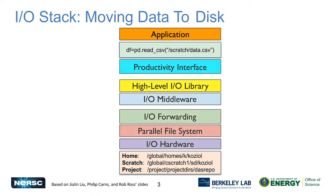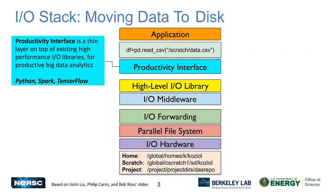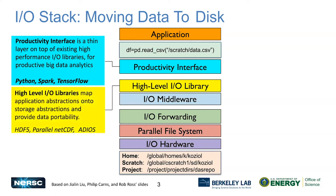In general, there are quite a few more layers between your app and the file system. There's a productivity interface layer, a couple of layers of IO middleware, and then it gets down into what we'd consider the storage system before it hits the hardware. The productivity interface is usually a thin layer focused on a language or specific model, maybe a science domain at the highest level. Below that are more general high-level IO libraries that provide object-level abstraction and portability for your data, so you can take files created at NERSC or Argonne or anywhere else and move them between systems and applications.